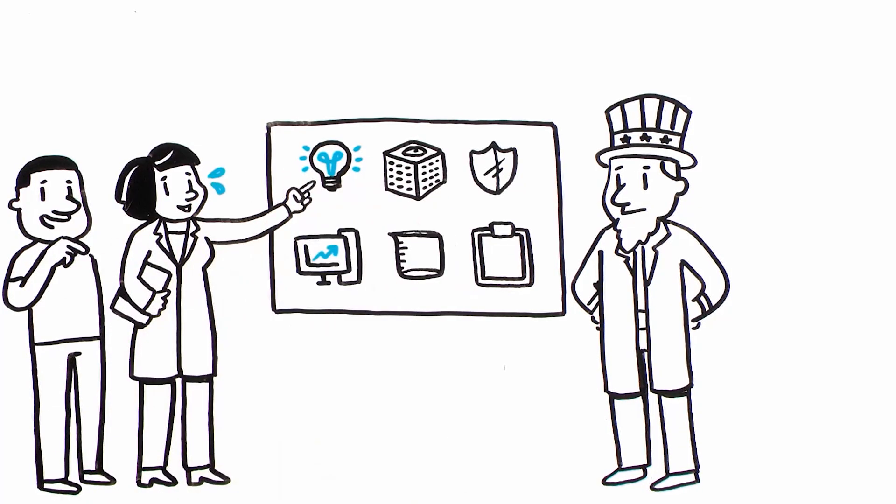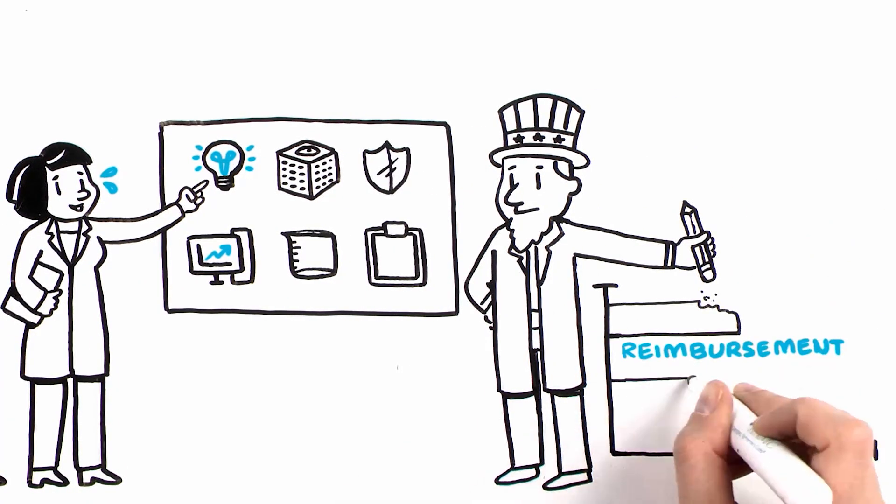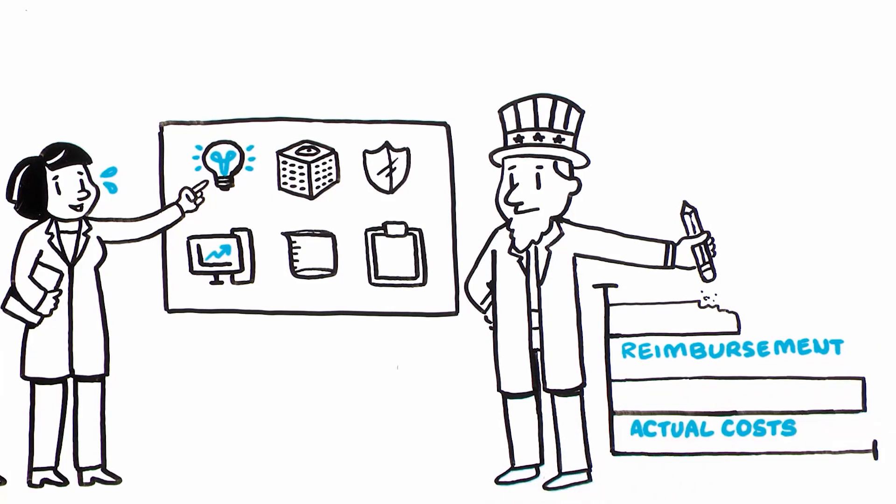Existing government-imposed reimbursement caps on certain types of research grants and on administrative costs further erode institutions' F and A cost reimbursement rates.